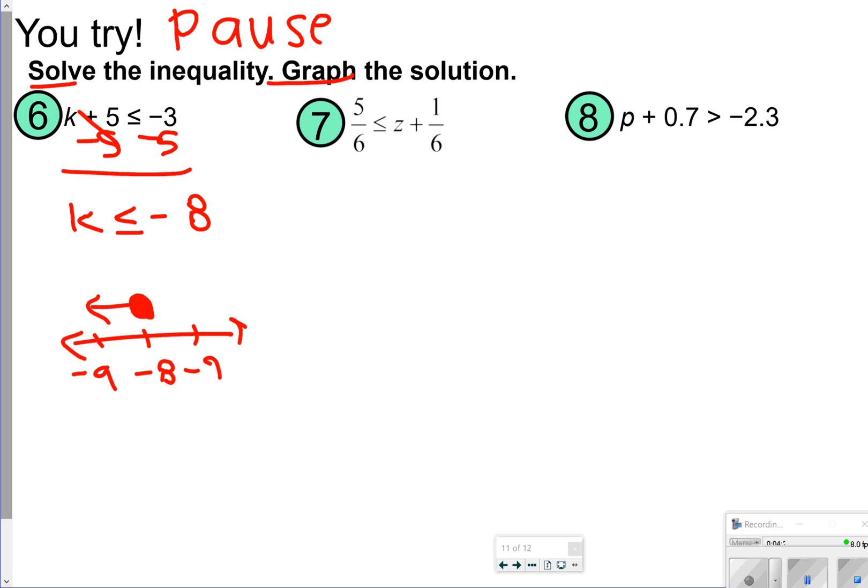Number 7, I'm subtracting 1 sixth from both sides. I get 4 sixths, or 2 thirds is less than or equal to Z, but I'm going to rewrite that as Z is greater than or equal to 2 thirds. It does help to keep your variable on the left. So I don't know if we've talked about that yet, but it does help to keep variable on the left, so that when you graph...